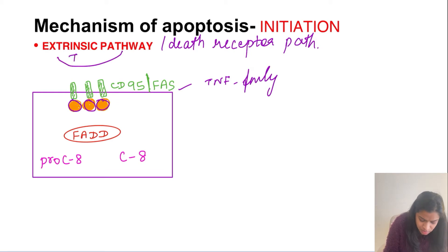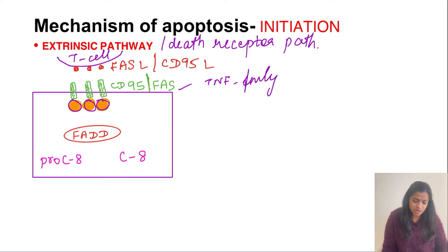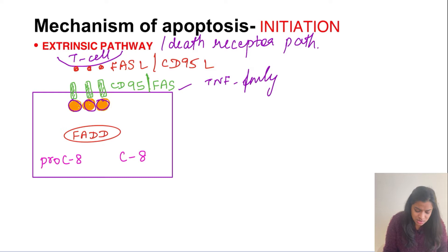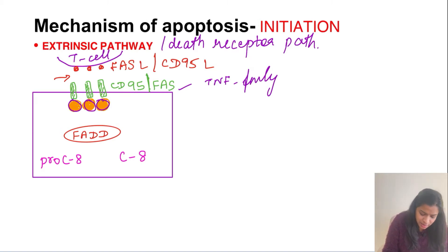Now here is a T cell, and this T cell has Fas ligand, also called CD95 ligand. This ligand present on the T cell comes and attaches to the CD95 receptor on the target cell, resulting in activation of the CD95 receptor. This activation causes trimerization of the CD95 or Fas receptors.